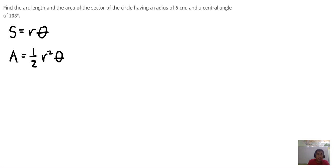So we need to convert 135 degrees first into radians. To convert degrees to radians, we need to multiply this by pi over 180.